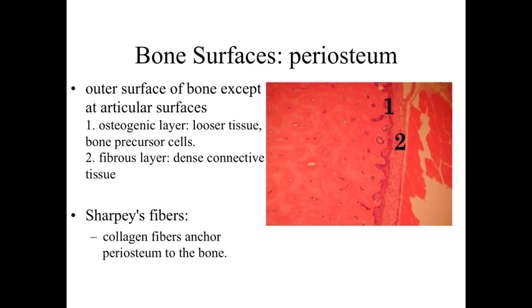Outside the osteogenic layer, we're going to have the fibrous layer. The fibrous layer is a dense connective tissue layer that provides a coating around the external surface of the bone. It also serves as the attachment site for tendons, ligaments, and other connective tissues to hold the rest of the body attached to our skeleton.